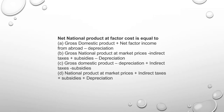Next: Net National Product at factor cost is equal to Gross National Product at factor cost minus depreciation. So NNP at factor cost equals GNP at factor cost minus depreciation. Also, Gross National Product at factor cost equals Gross National Product at market price minus indirect taxes plus subsidies — option B is correct.